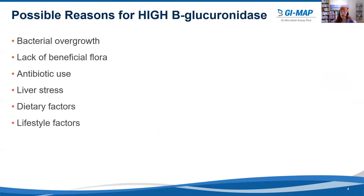There are a number of possible reasons for high beta-glucuronidase. Here are some of the top reasons: bacterial overgrowth, a lack of beneficial flora, antibiotic use, liver stress, dietary factors, and lifestyle factors. Let's go over these one by one.